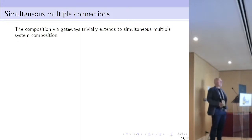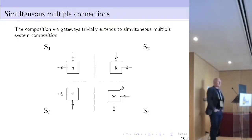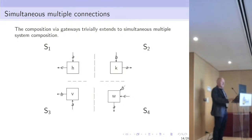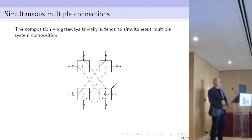As you can guess, this simple idea fortunately extends to simultaneous multiple system composition. For instance, if you have four systems and choose four different participants to act as possible interfaces, you can connect the four systems by replacing these components with forwarders. Of course, now you can compose them in several different ways, not in a single one like the binary case.